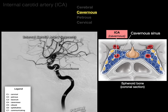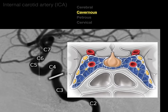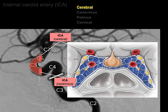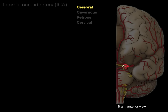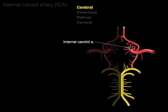Looking at an angiogram where dye is injected into the internal carotid artery, we can take a coronal section through this lateral view and see the internal carotid artery in the cavernous sinus as it curves around. Taking another cross-section, there is the cerebral part of the internal carotid artery, from which all the other branches we're going to discuss come off.